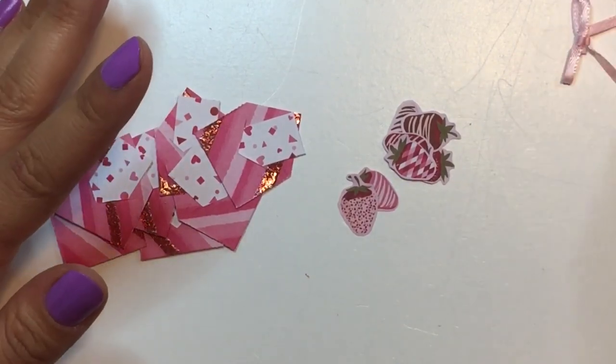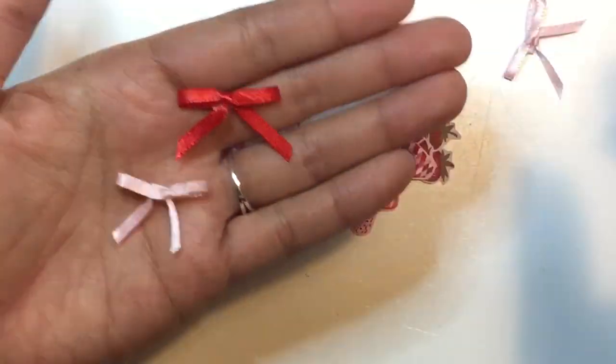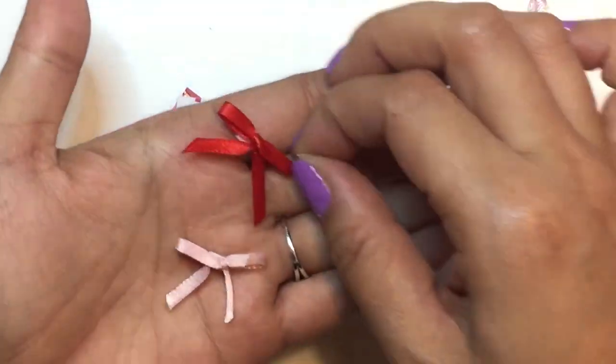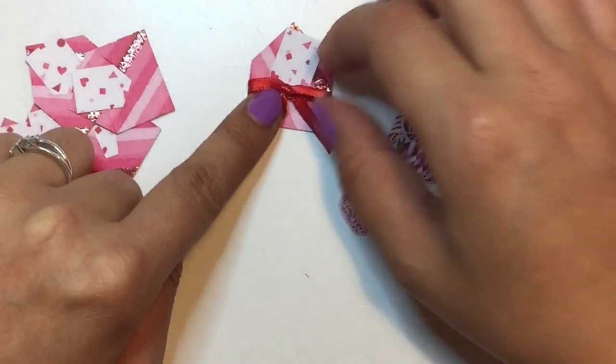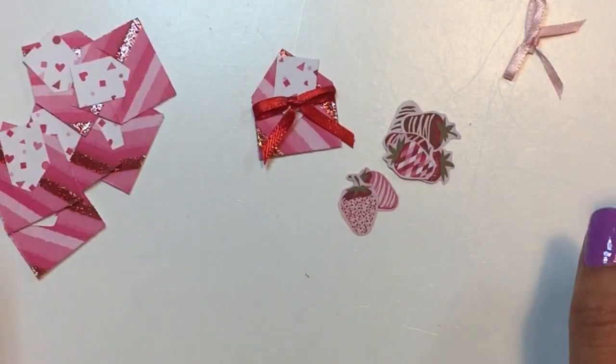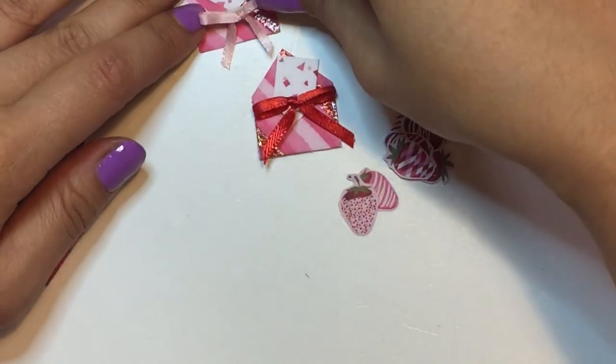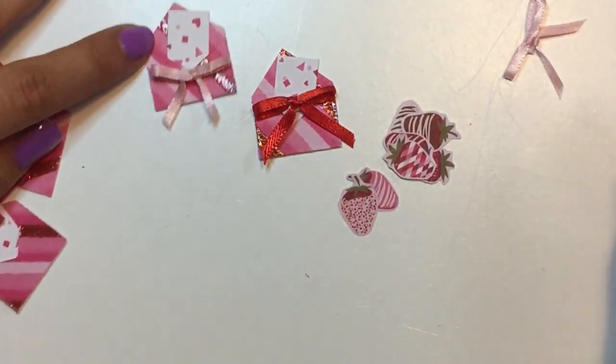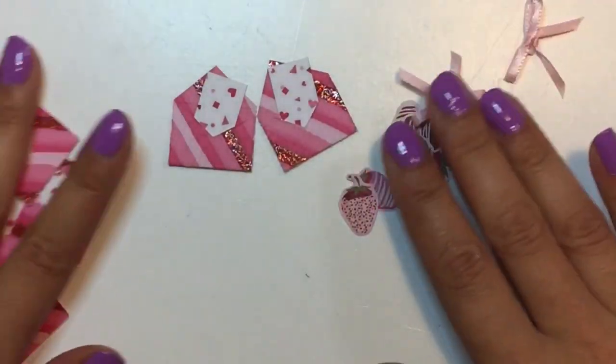And you can use anything. Like you can use the bows from my tutorial that I did. I thought these would look really cute on there. How cute would that be with the little bow there? I like that. I might do that for another set of these. But I think they would look adorable with the little bow. But this time I'm going to be using the strawberries.